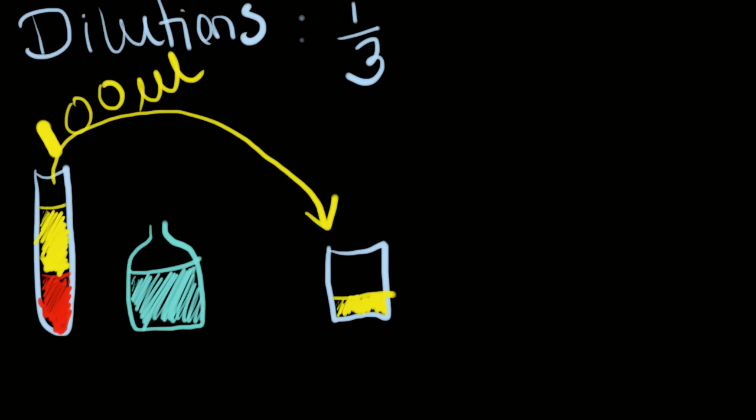Next, we're going to need to take some of the diluent and put some in here. Since we're doing a 1 to 3, it's going to be one part serum and two parts diluent for a total of three parts.